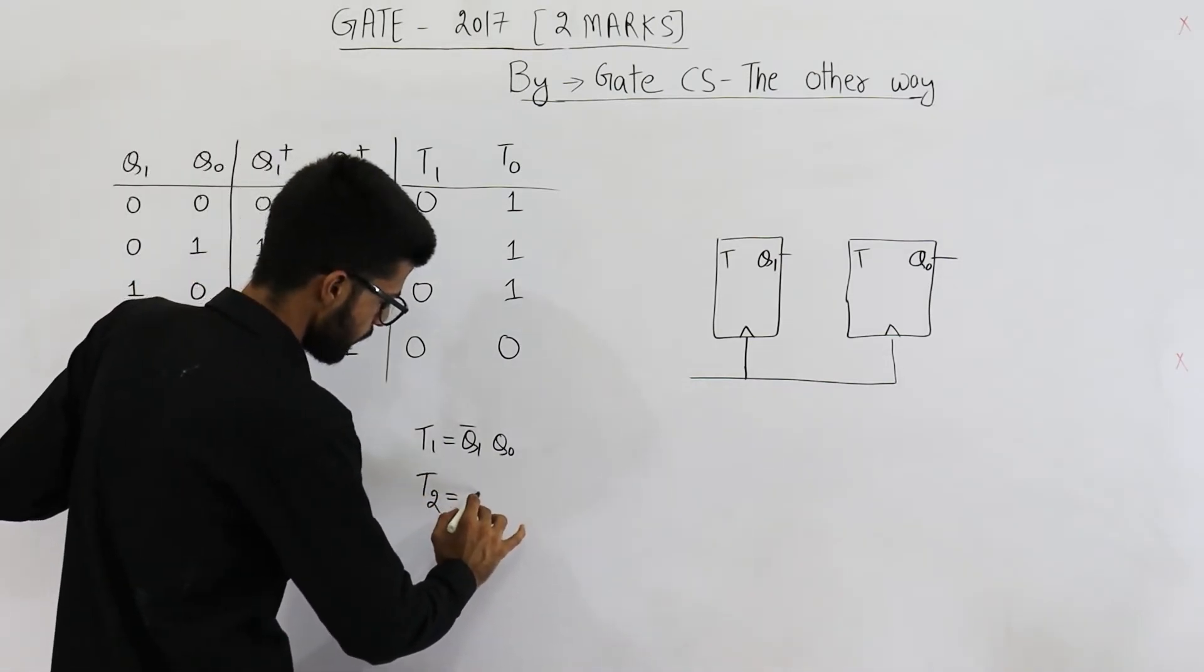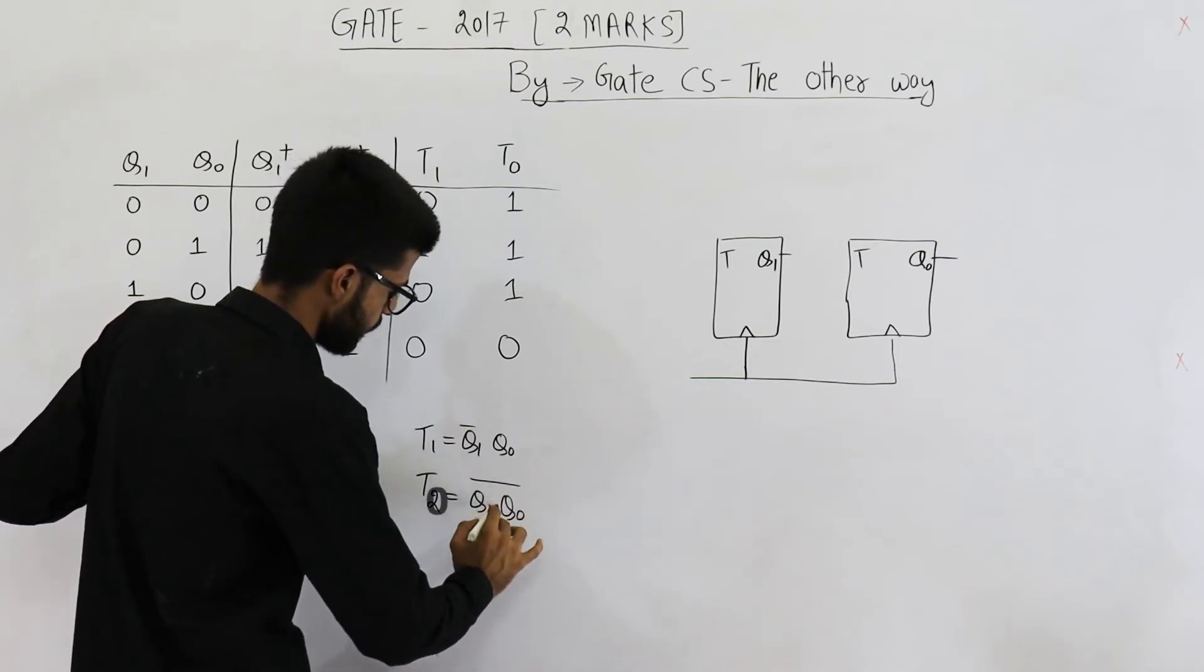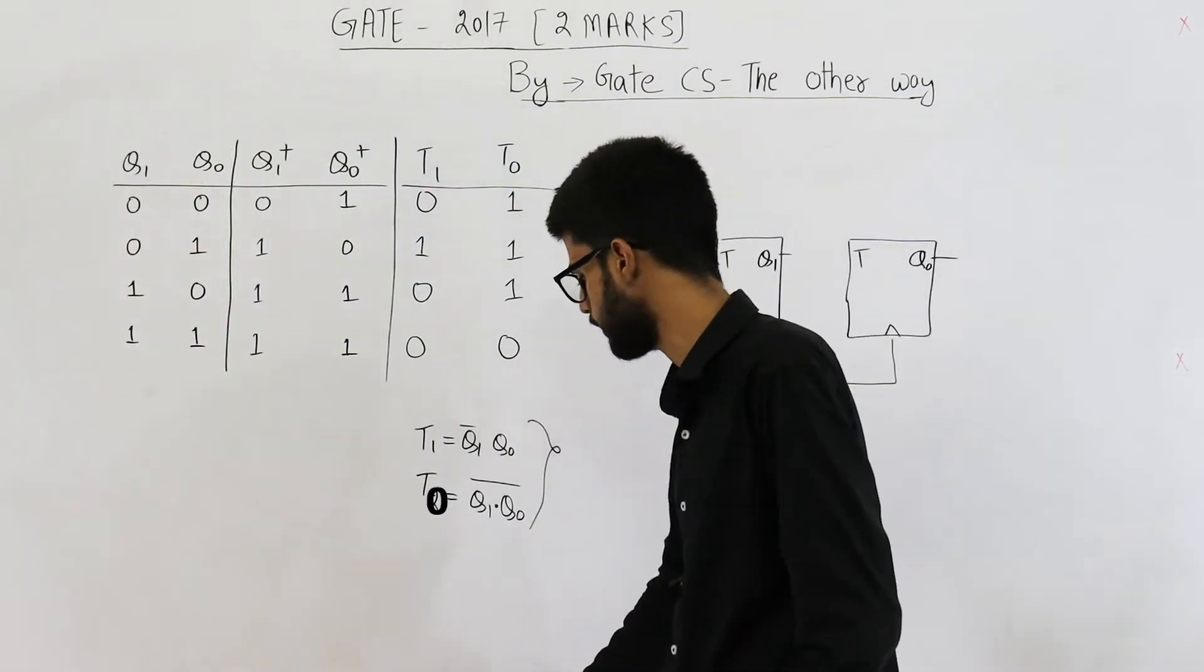And expression for T0 is NAND of Q1 and Q0. T0 is equal to Q1, Q0 NAND. This one is clearly visible. It's the truth table of NAND gate. Let us see which option is correct.